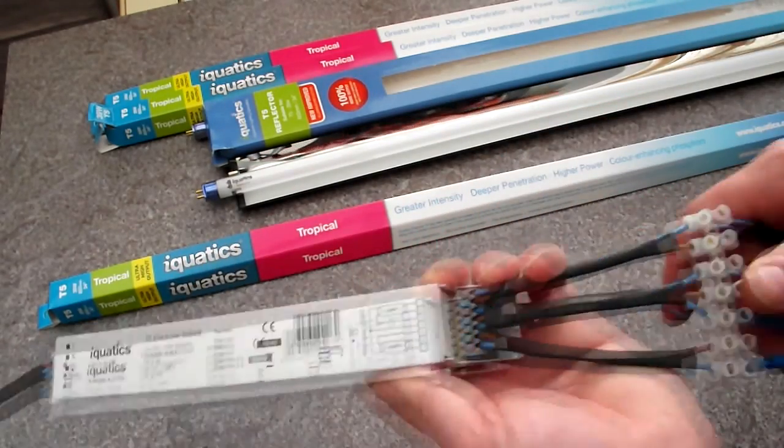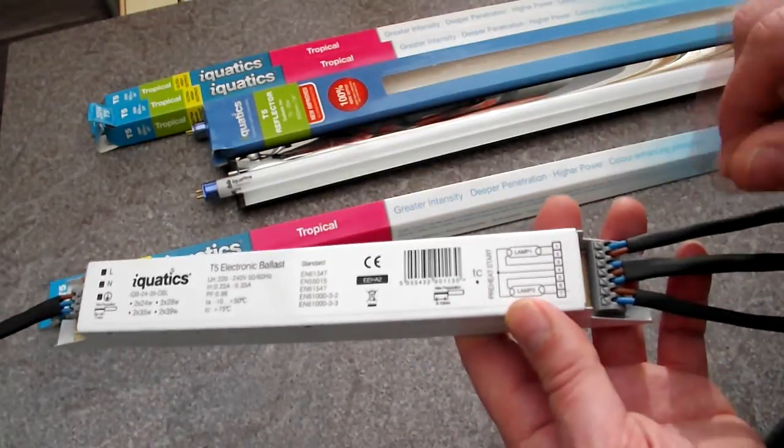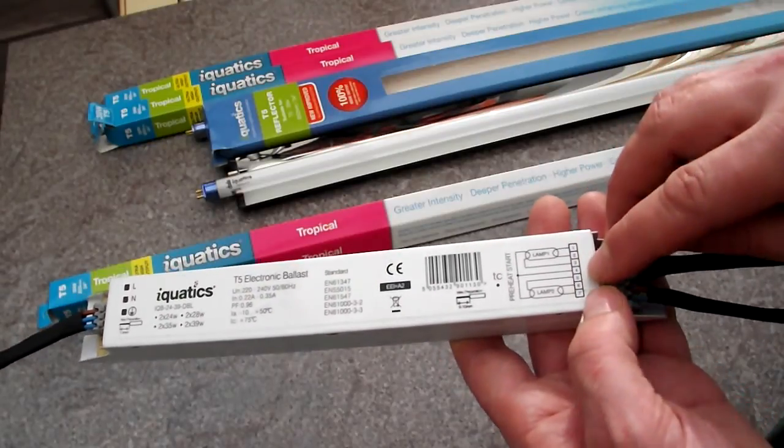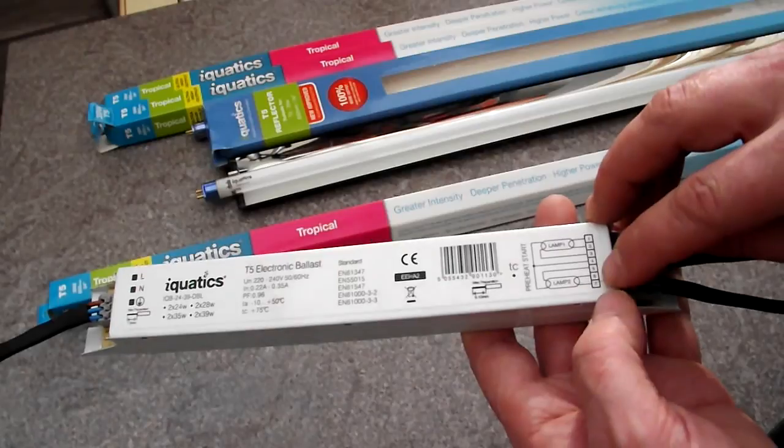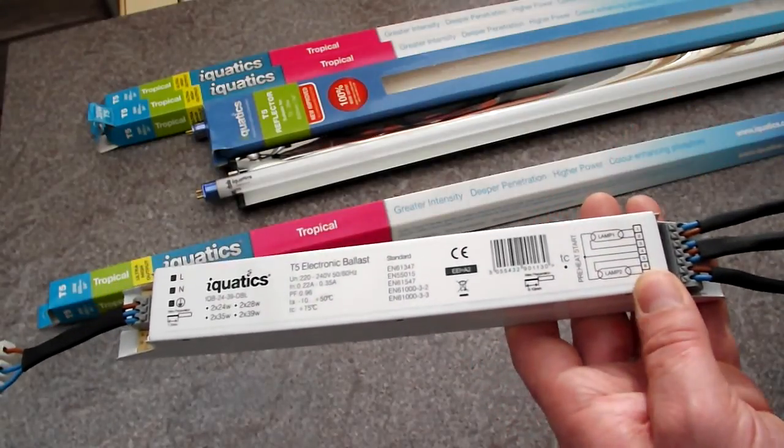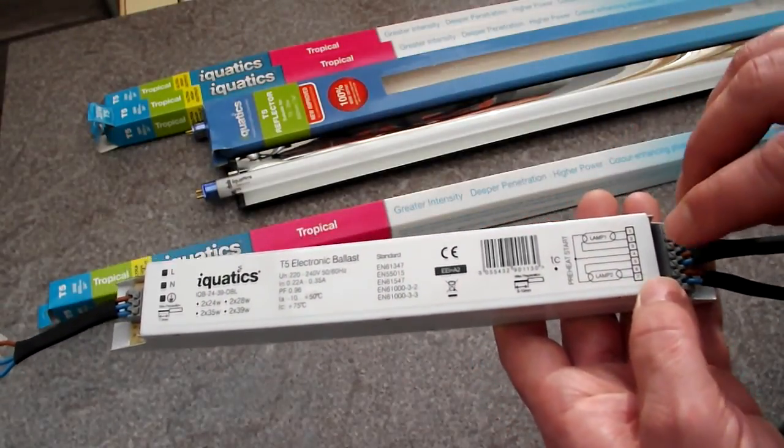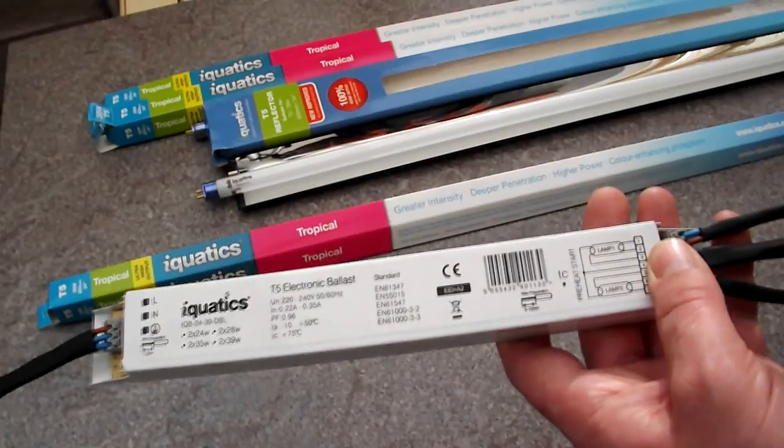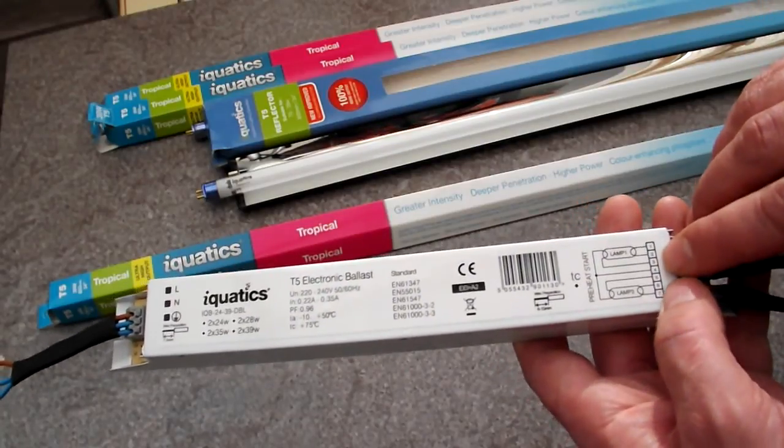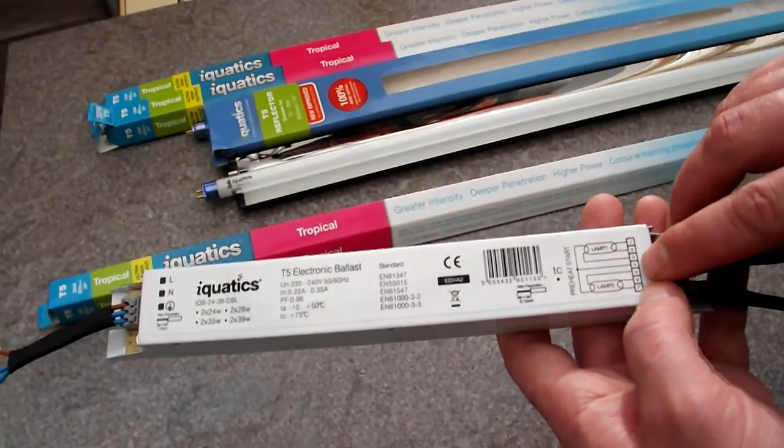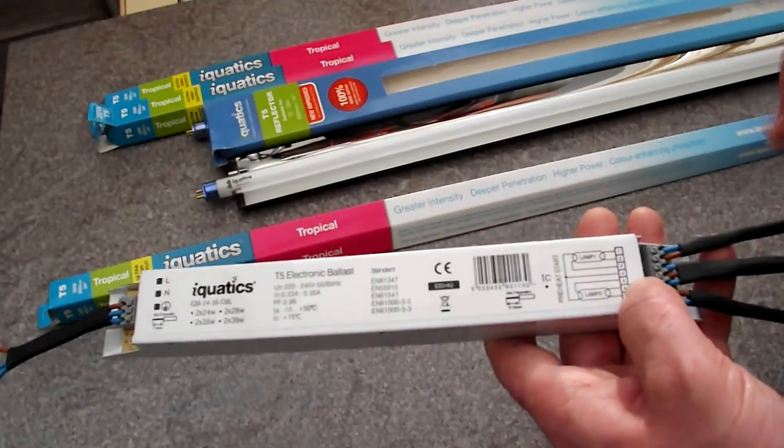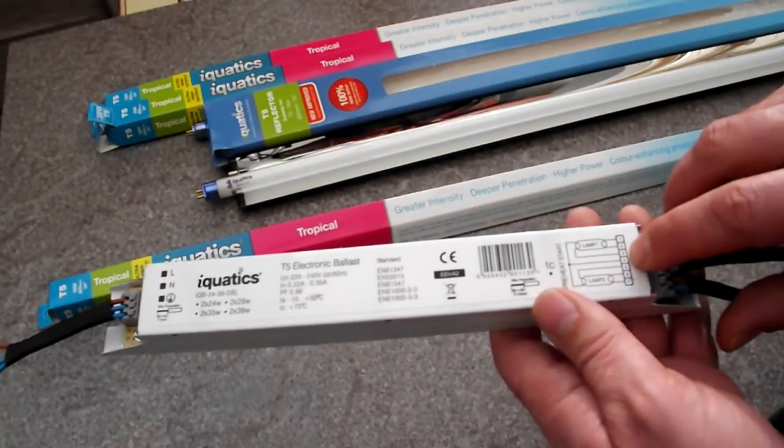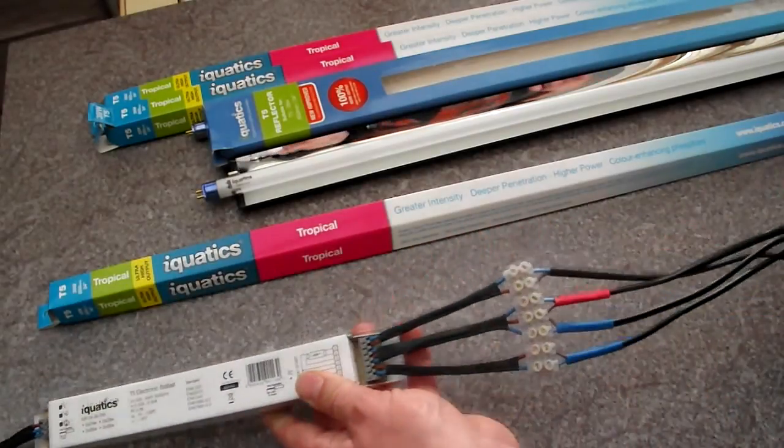On the other end, you've got the seven ports for the lamps. Now, slots one and two go to one side of the lamp on lamp one. Slots six and seven go to the same side of the lamp on lamp two. And then you've got three, four and five in the middle. Now these go to the opposite side on both lamps. You've got three and five, which one cable from each of the lamps go into. And then you've got number four, which they share.